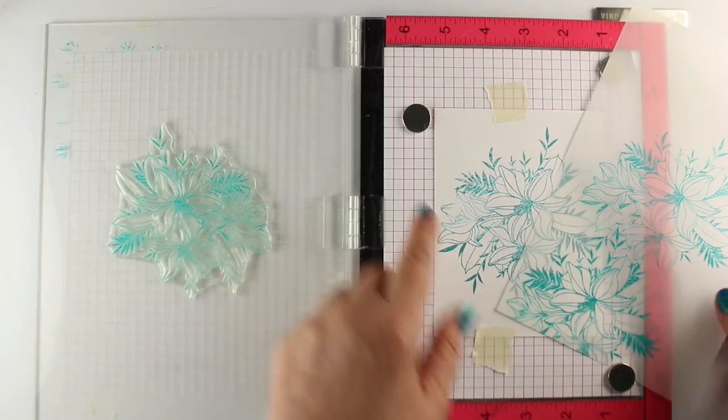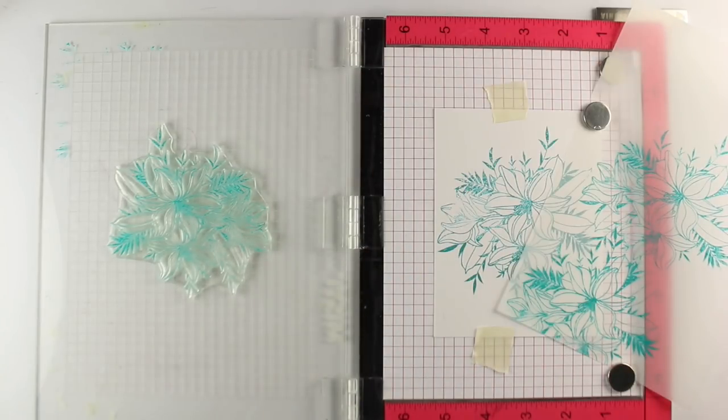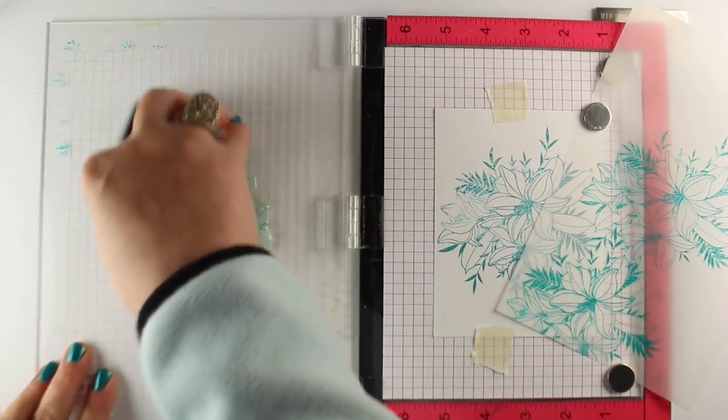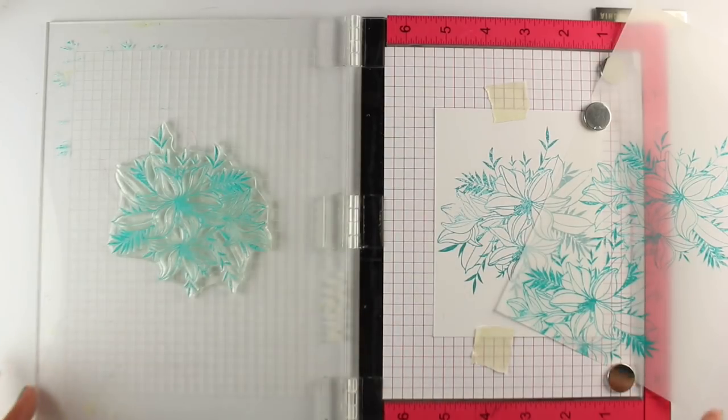I let some of them overlap each other just a little bit. Some of the outside solid leaves can overlap because they can look like they're in front. That'll work just fine.